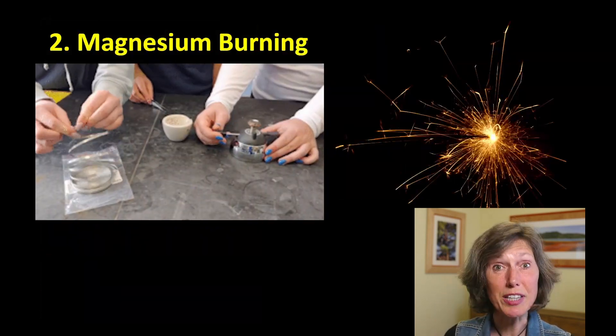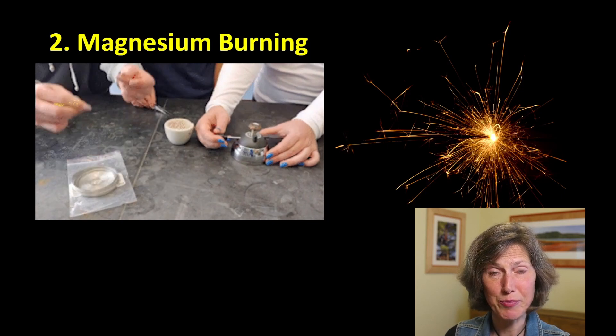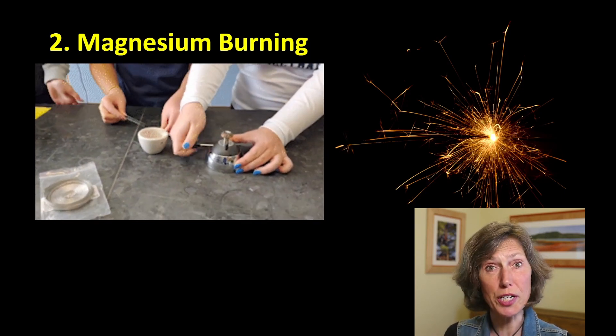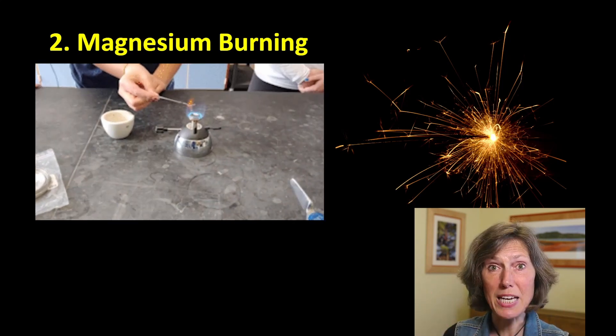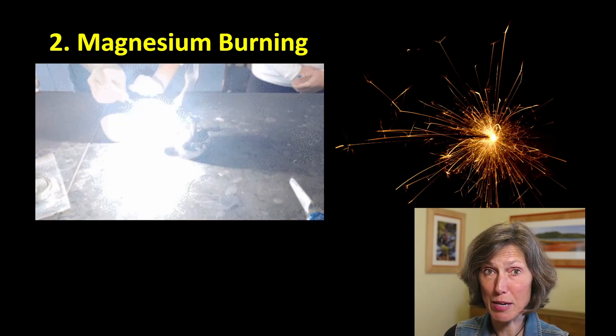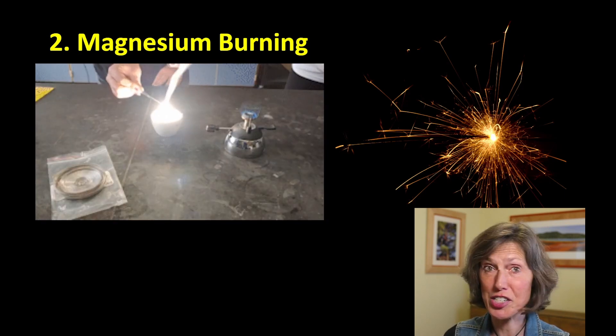Reaction number two, the combustion of magnesium. Easy to rip, unlike copper. Hold it in the butane flame again, and amazing burst of light. You don't even have to hold it in the flame any longer, and it turns into ash.